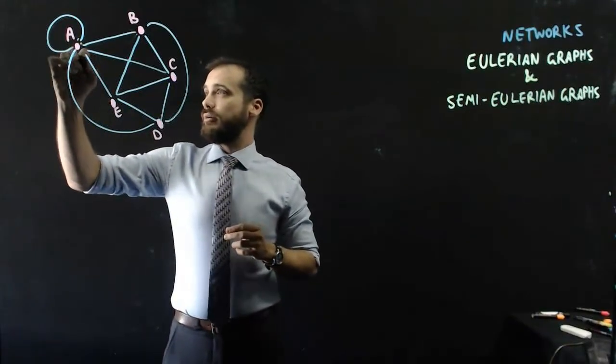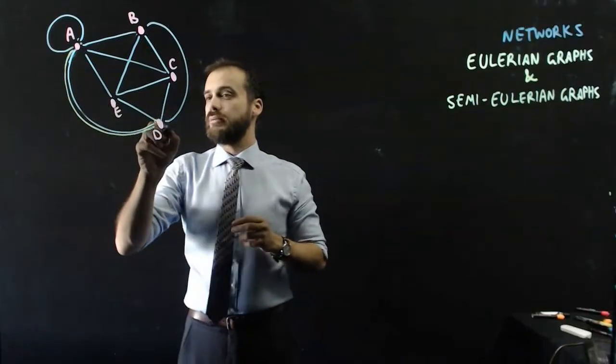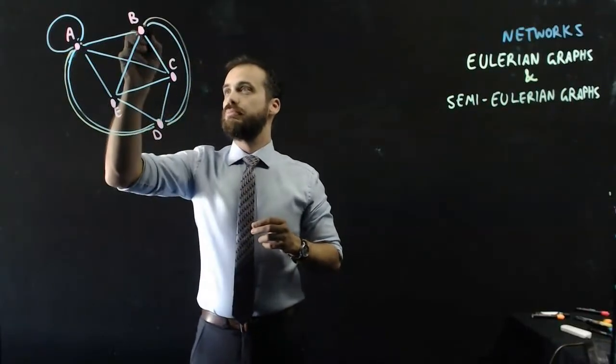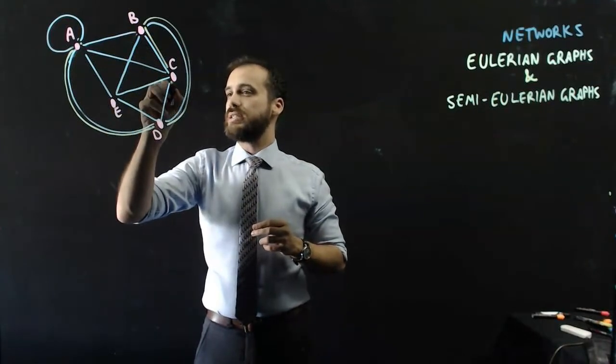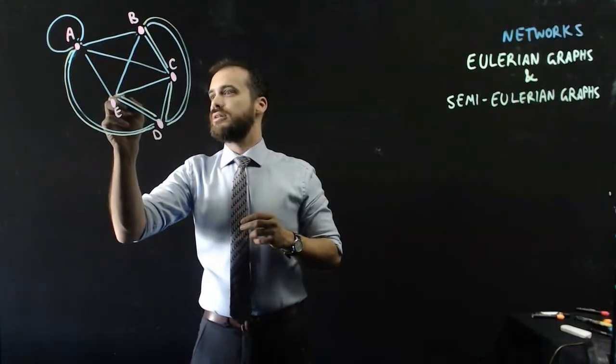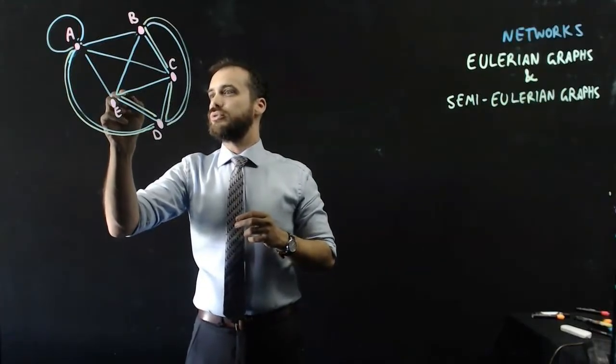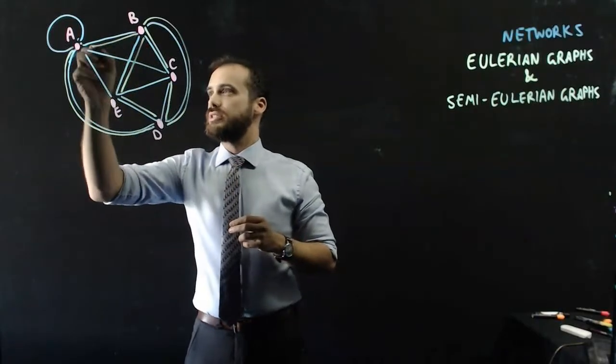I'm going to start at A. I'm going to travel to D, and then I'm going to go to B, and then C, and then back to D, and then to E, and then let's go to B, and then let's go to A.